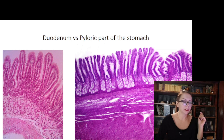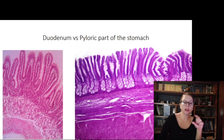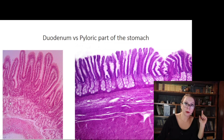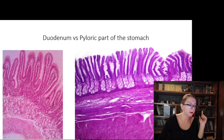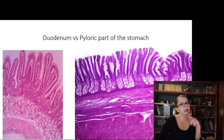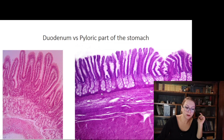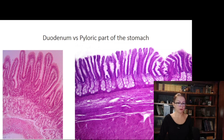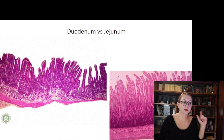The second criterion is the location of the glands. In the pyloric part of the stomach, glands are located in the lamina propria, while in the duodenum they are located in the submucosa. Notice that here the lamina propria is occupied by crypts, with the muscularis mucosae in between, and only after that come the glands — which are in contact with the muscularis. In the pyloric part, between the muscularis and the glands there is loose connective tissue of the submucosa.